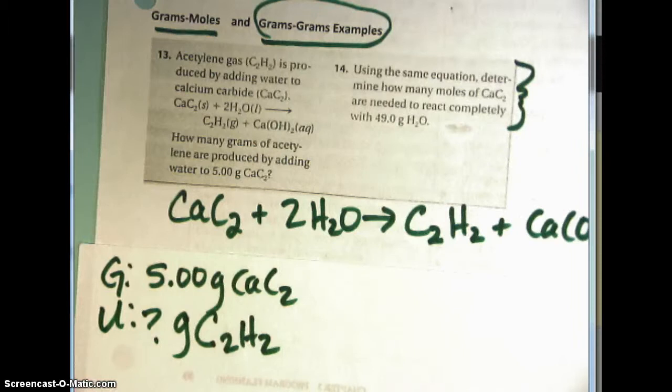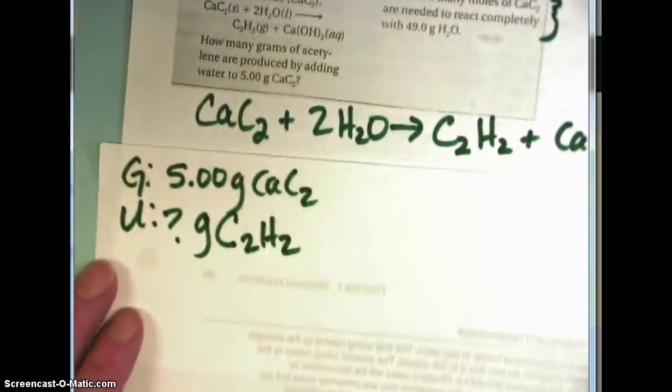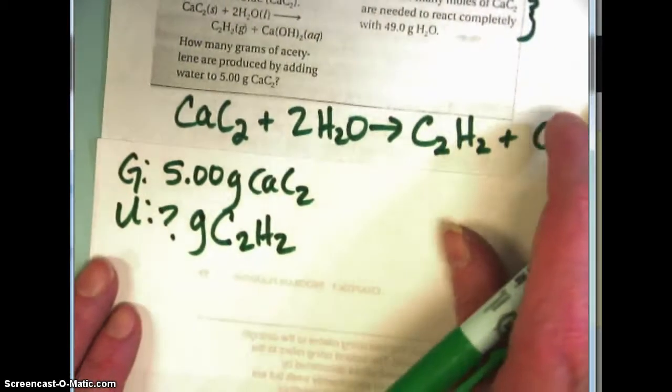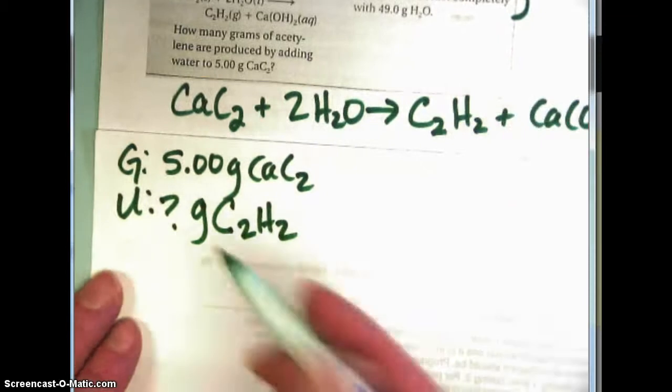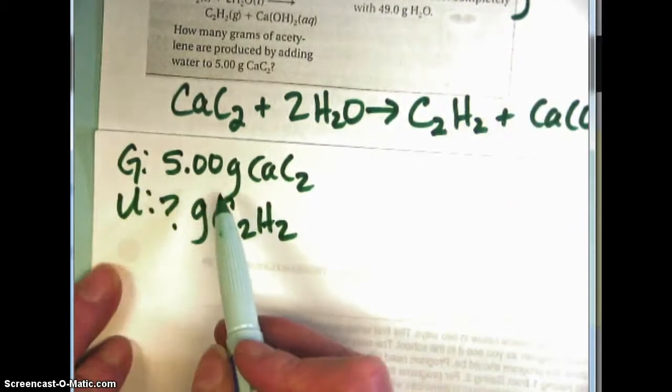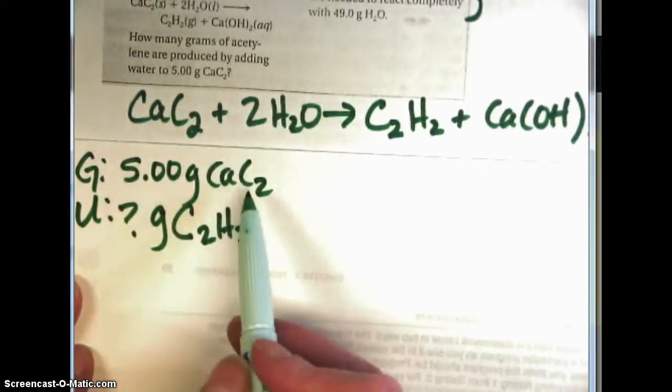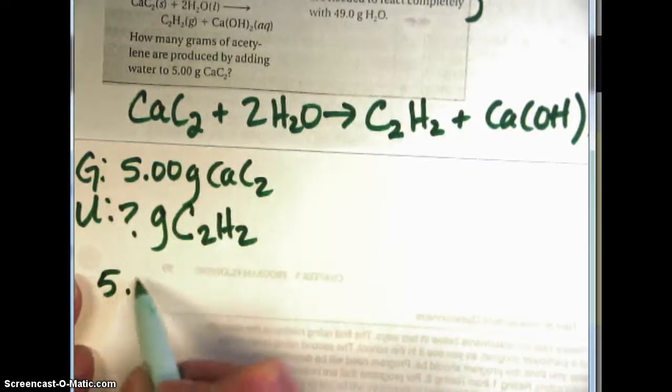So you always want to start with the given. This is going to be a three-step problem and in the first step we'll have to convert from grams of calcium carbide to moles of calcium carbide.